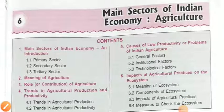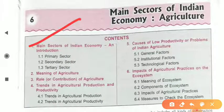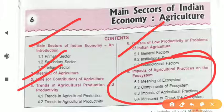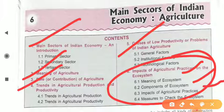Good morning, dear students. As you all are familiar, we are going through our sixth chapter which is the main sector of Indian economy. In this chapter we already covered the main sectors of Indian economy, the meaning and role of agriculture, and the causes of low productivity or problems of Indian agriculture. Today's topic is the impact of agriculture practices on the ecosystem.